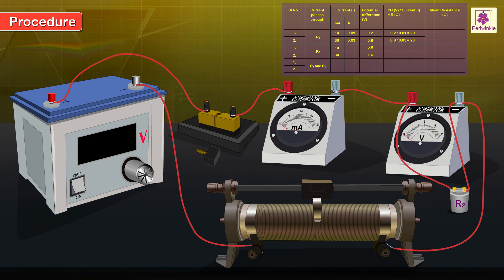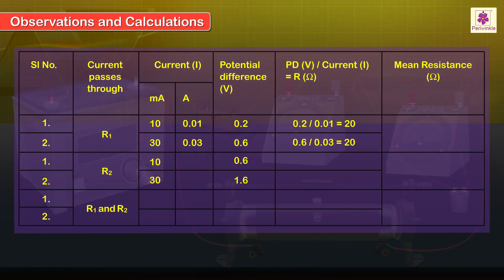Switch off the current. Observations and Calculations: For a potential difference of 0.6 volts, a current of 10 mA (0.01 A) flows through the circuit. For a potential difference of 1.6 volts, a current of 30 mA (0.03 A) flows. Calculate the value of R2 using Ohm's Law. For the first set of readings, R2 equals 0.6 divided by 0.01, which is 60 ohms.